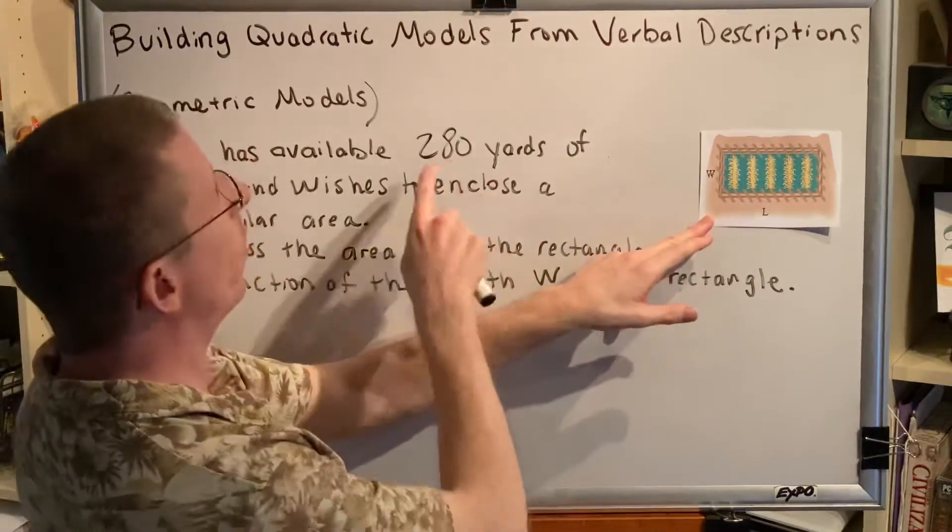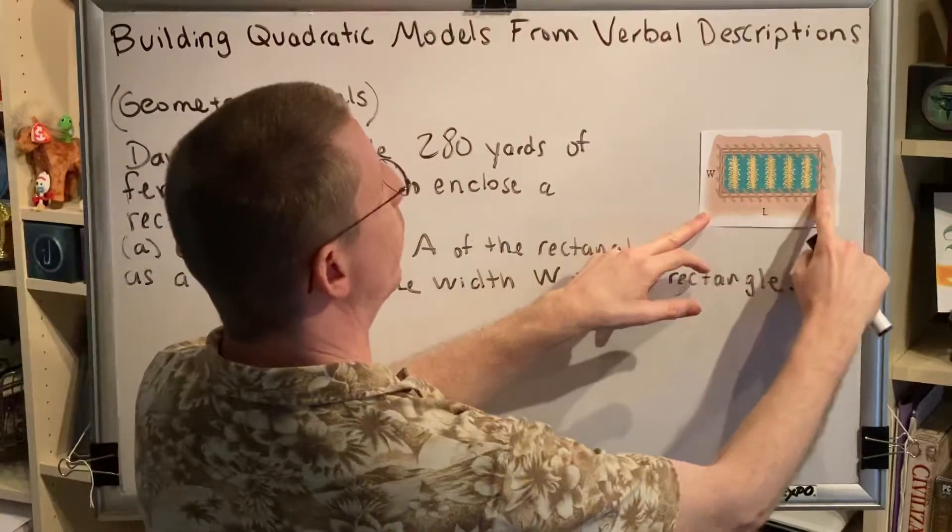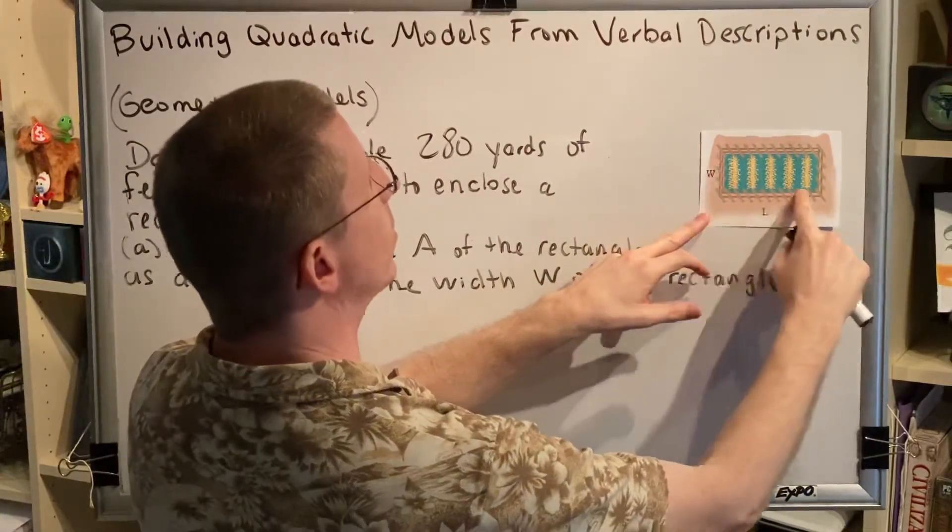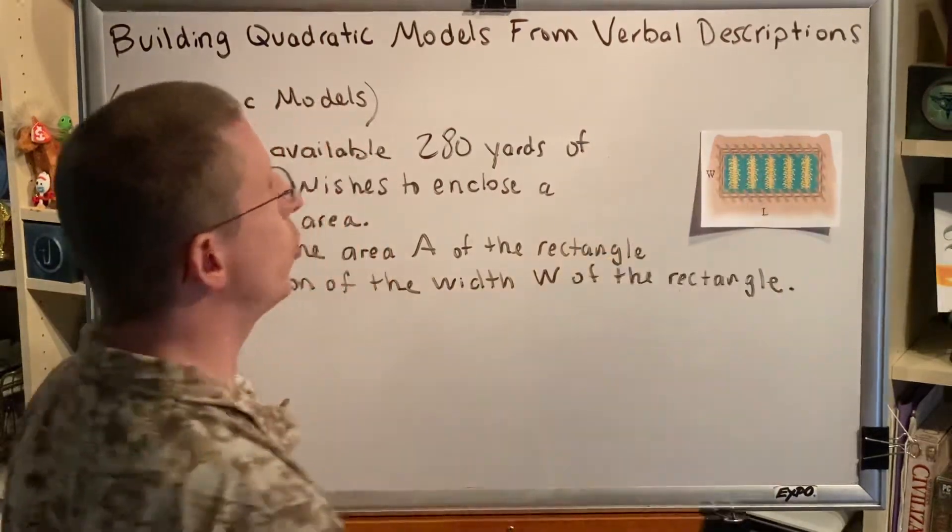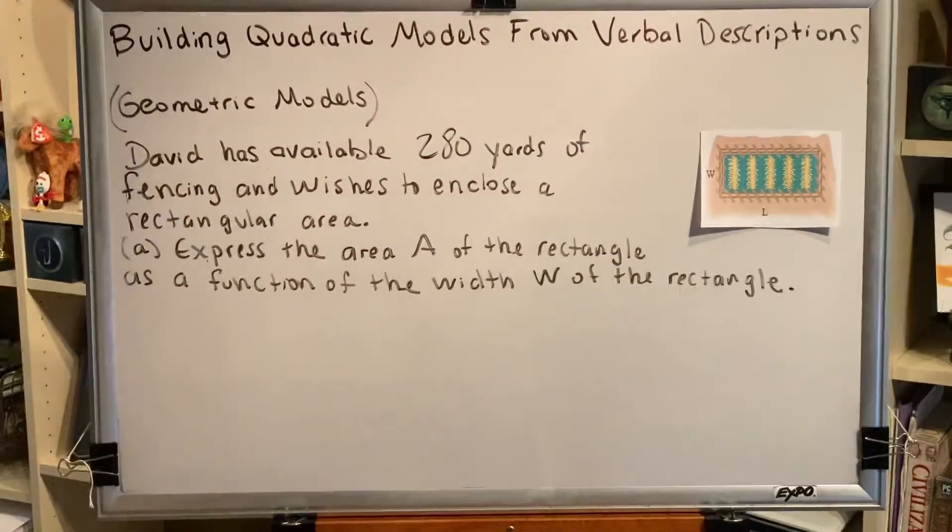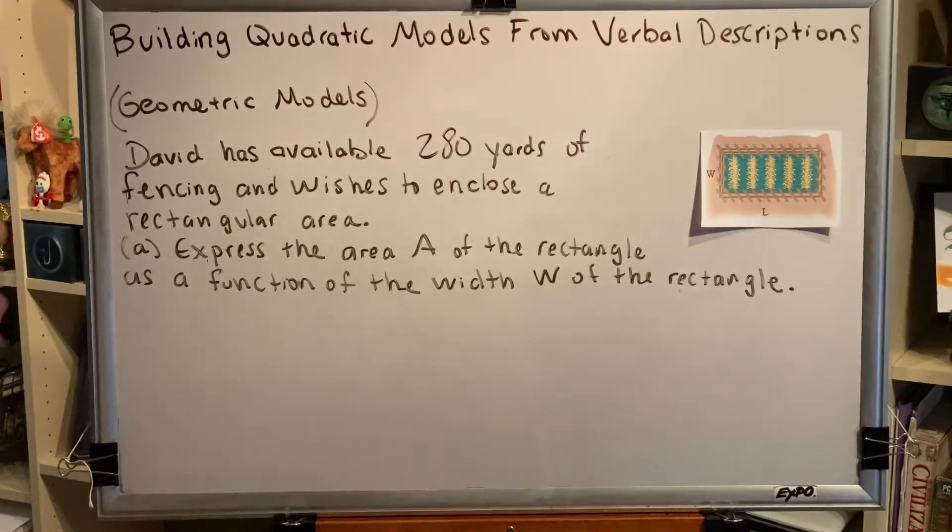So first of all, the fencing is 280 yards. That is the total length of fence that goes around the outside edge of this particular piece of land. That is referred to as the perimeter. So in this problem, the perimeter is 280 yards.